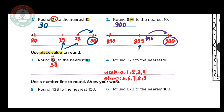The 8 to the right of the circle becomes 0. Now we ask: is the underlined digit weak or strong? The 8 is a strong digit, so it pushes the 4 up by 1, making it 5. So the answer is 50. To recap: circle the tens, underline the ones; the 8 is strong, so it pushes the 4 to 5, giving 50.